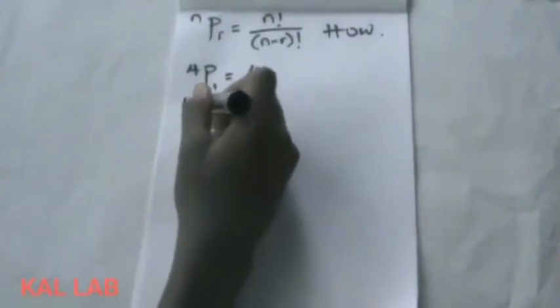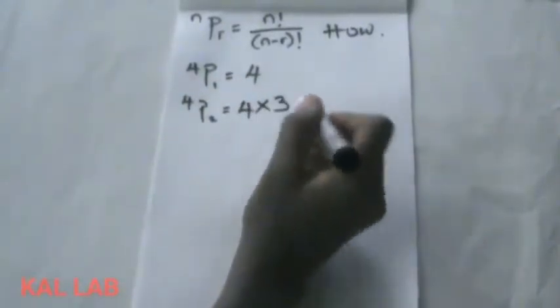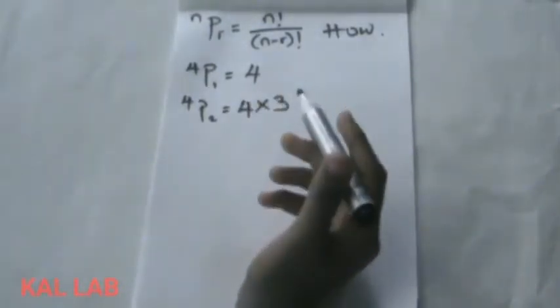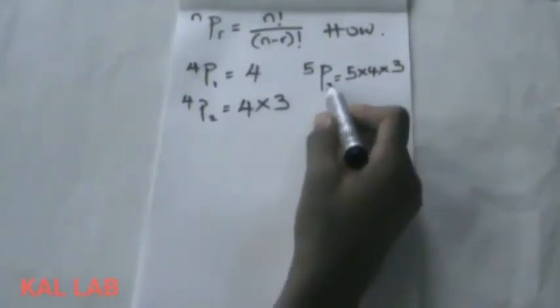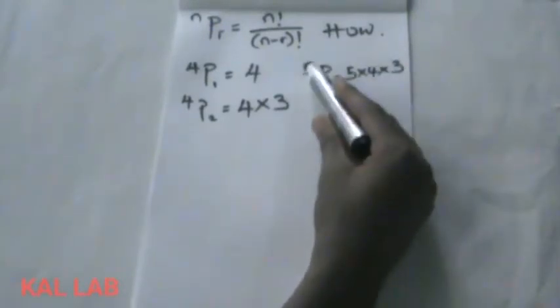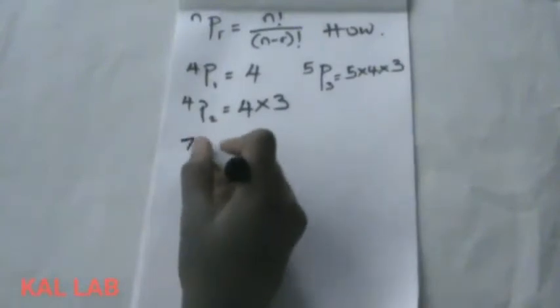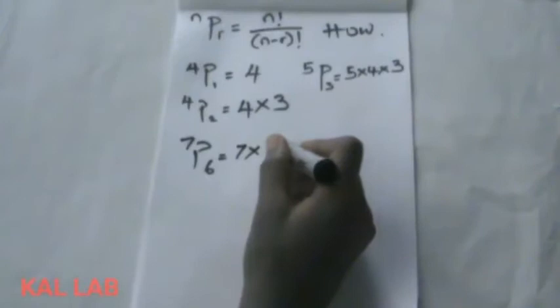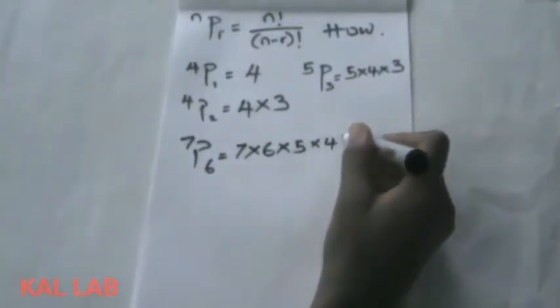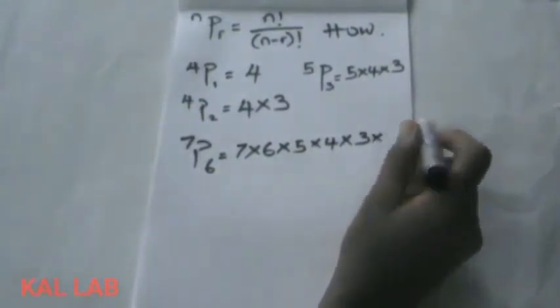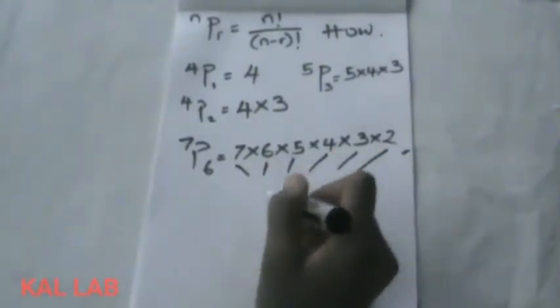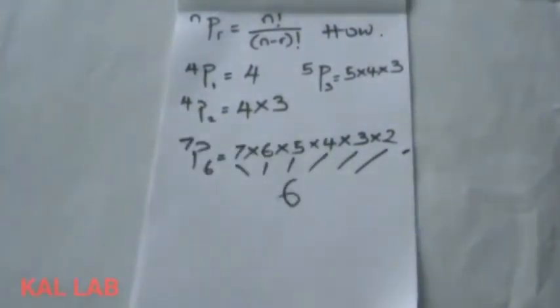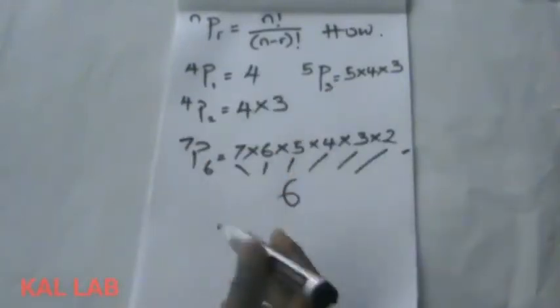4, and 4 permutation 2 is 4 times 3. That is you count down from 4 in two places. For example, 5 permutation 3 is 5 times 4 times 3, so we see that 3 comes to play here. 5, 1, 2, 3, and from 5 we count down 3 times. 7 permutation 6 in that case would be 7 times 6 times 5 times 4 times 3 times 2, making it 1, 2, 3, 4, 5, 6. We're starting from 7.